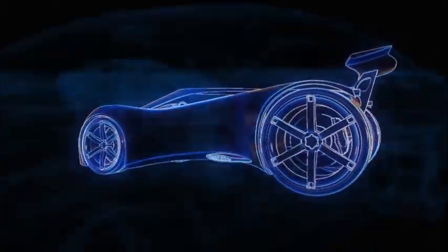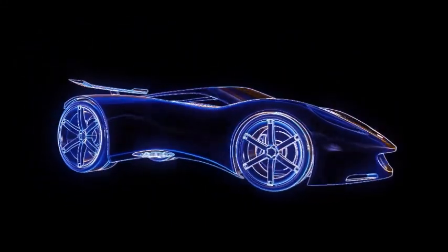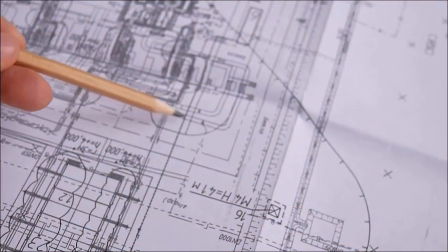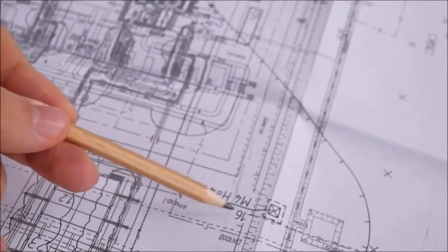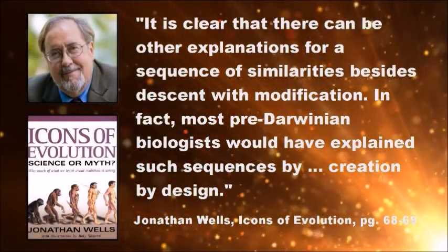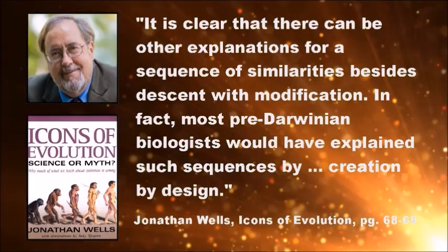Indeed, evolutionary biologist Tim Berra tried to use automobiles as an example of descent with modification. However, this example backfired, since the cause of the change in these vehicles was intelligent design. Thus, this example actually served to undermine his point and so has become known as Berra's blunder. The fact of the matter is that intelligent beings use useful models and plans over and over again for different purposes. Thus, homologies are explained equally well by a common design plan as they are by common ancestry. According to Jonathan Wells, it is clear that there can be other explanations for a sequence of similarities besides descent with modification. In fact, most pre-Darwinian biologists would have explained such sequences by creation by design.